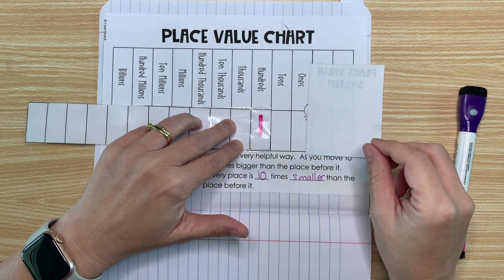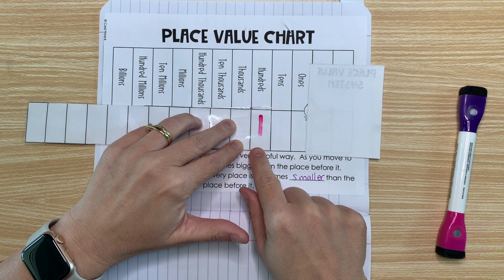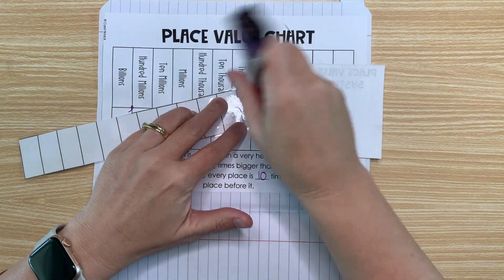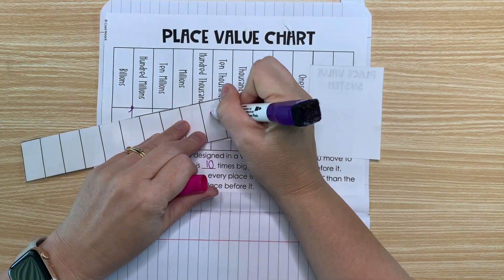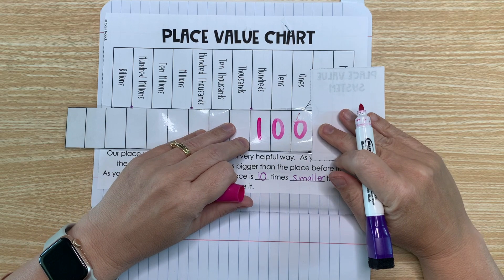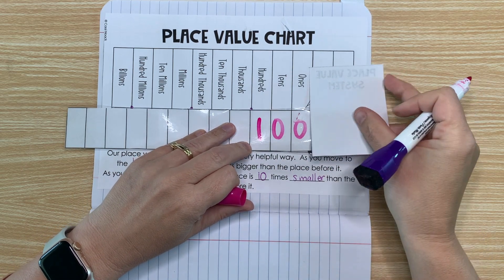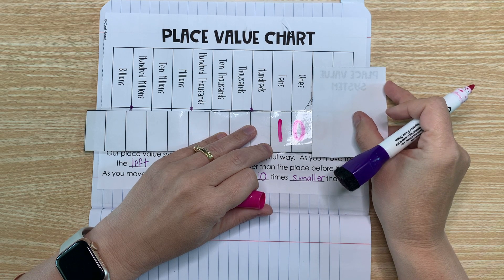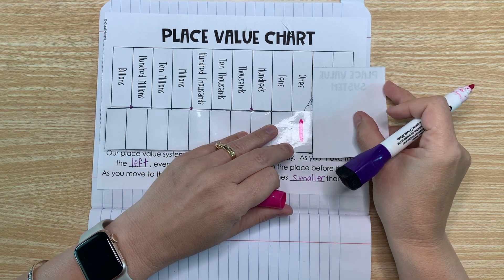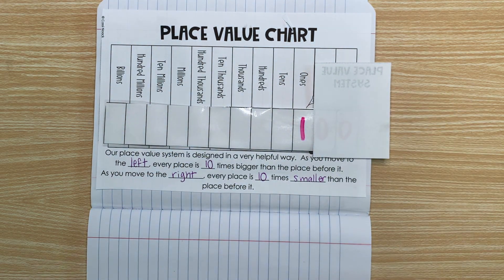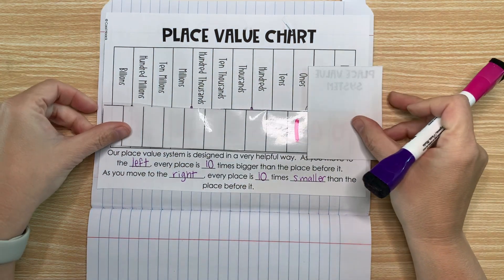So the same thing happens if we move to the right. So here we have a number that is 100. So I'm going to erase this and write it where it looks like 100. If I have the number 100 and I move it to the right, watch what happens. It's now only worth 10. If I move it again, it's now only worth one.